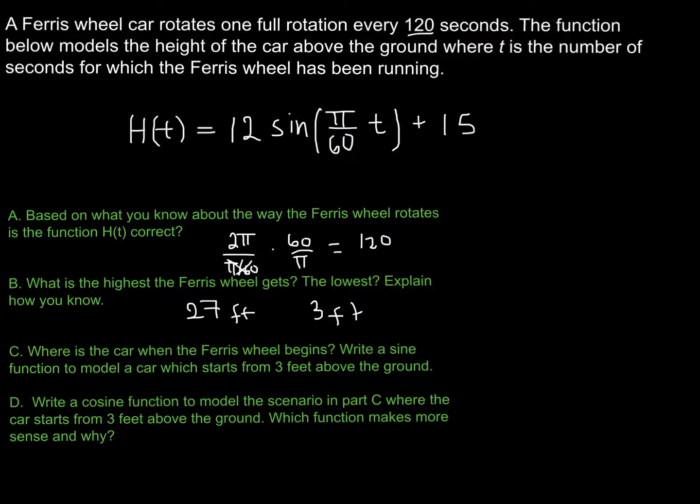Where is the car when the Ferris wheel begins? So what I want to think about is, okay, when time is zero, where is the car at? And this shouldn't be too hard for us to figure out because where does sine start off? Where is its y-intercept? Well, sine always begins at the midline, and that should make sense, right? Sine of zero would be zero, and 12 times zero is zero plus 15. So I would be 15 feet off the ground, above the ground.